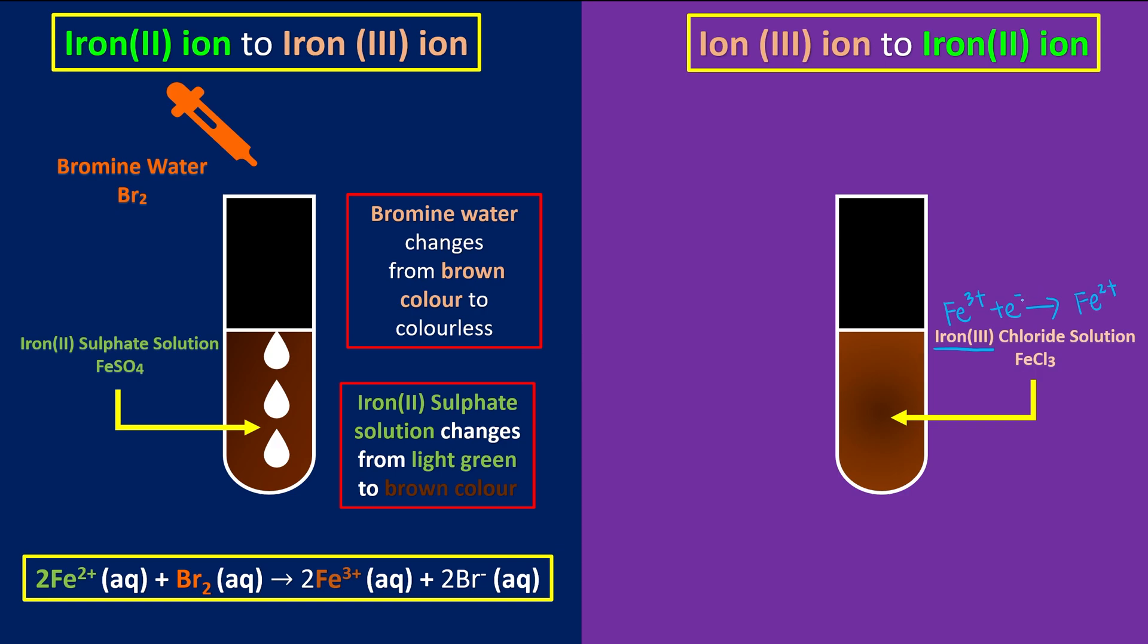So receiving electrons means reduction process. So of course, we need a reducing agent. So today, we're going to use zinc powder, and of course, you can use any other reducing agent. And we're going to add in our zinc powder slowly, and we're going to observe the changes.